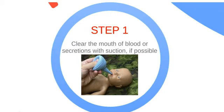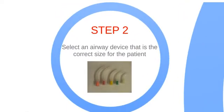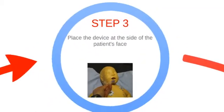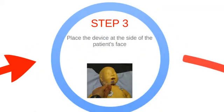Step 1 is to clear the mouth of any blood or secretions with suction. Step 2 is to select a size-appropriate airway device. Step 3: place the device at the side of the patient's face. You'll want to choose a device that extends from the corner of the mouth to the earlobe.